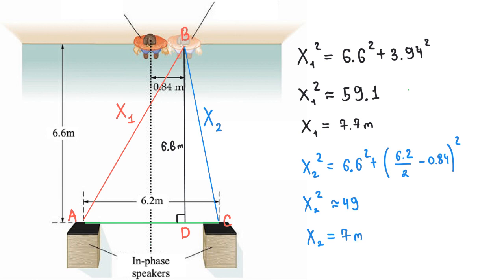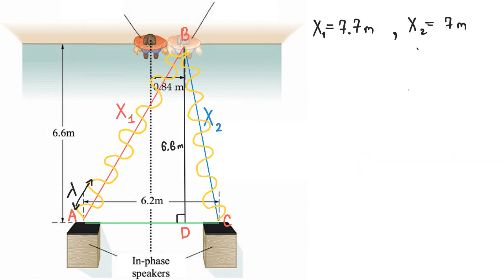Let's analyze what we have got. How many wavelengths fit in x1? To see this, we just divide x1 by the wavelength and get 5.5. It means that 5.5 wavelengths fit in x1. Now, it's your turn. How many wavelengths fit in x2? The answer is 5 wavelengths.